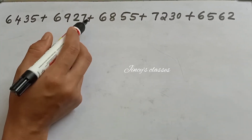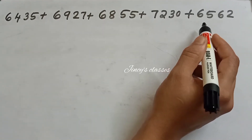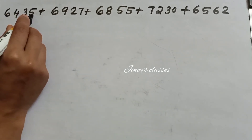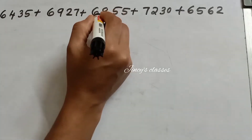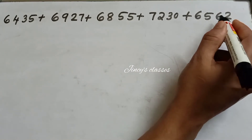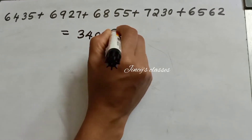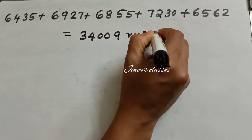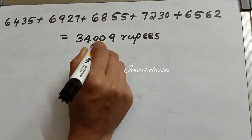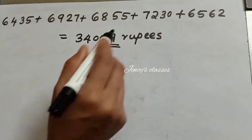Total income of Reviatan for the first 5 days: 6,435 + 6,927 + 6,855 + 7,230 + 6,562. We get total income Rs. 34,009. That is the total income of Reviatan for the first 5 days.